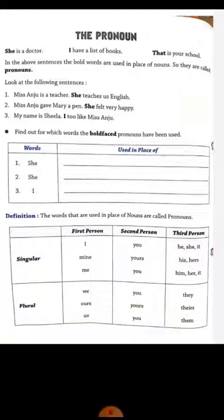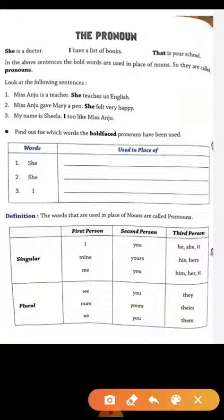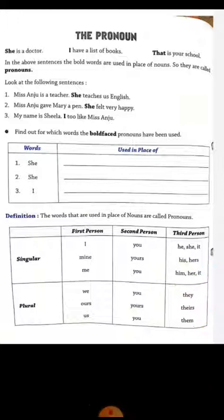Next, for the third person singular we have: he, she, it, his, her, his, him, it. In the plural, we use they, theirs, and them.